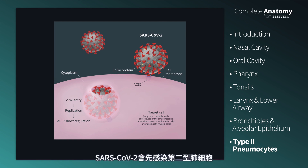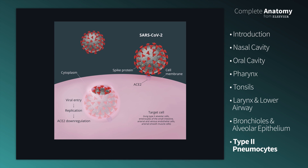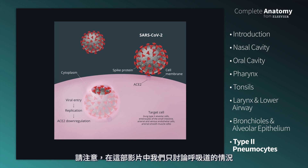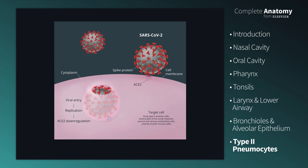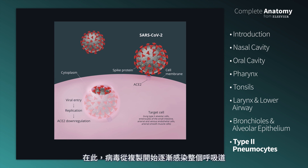These are the primary cells through which SARS-CoV-2 infects the lungs. As you can see from this image, SARS-CoV-2 contacts the cell membrane of a type 2 pneumocyte, its target cell. Remember that we are only discussing the airway in this video. By docking with the ACE2 receptor in a complex mechanism, the virus is able to enter into the type 2 pneumocyte, replicate, and down-regulate ACE2. And here, from replication, it infects the rest of the airway.